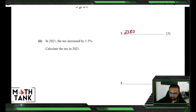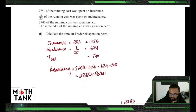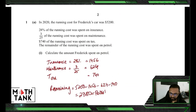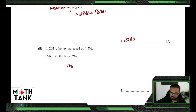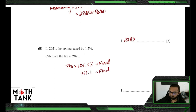In 2021, the tax increased by 1.5 percent. Calculate the new tax. The old tax was $740. So: 740 multiplied by the multiplier 101.5 percent gives $751.10 as the final value.